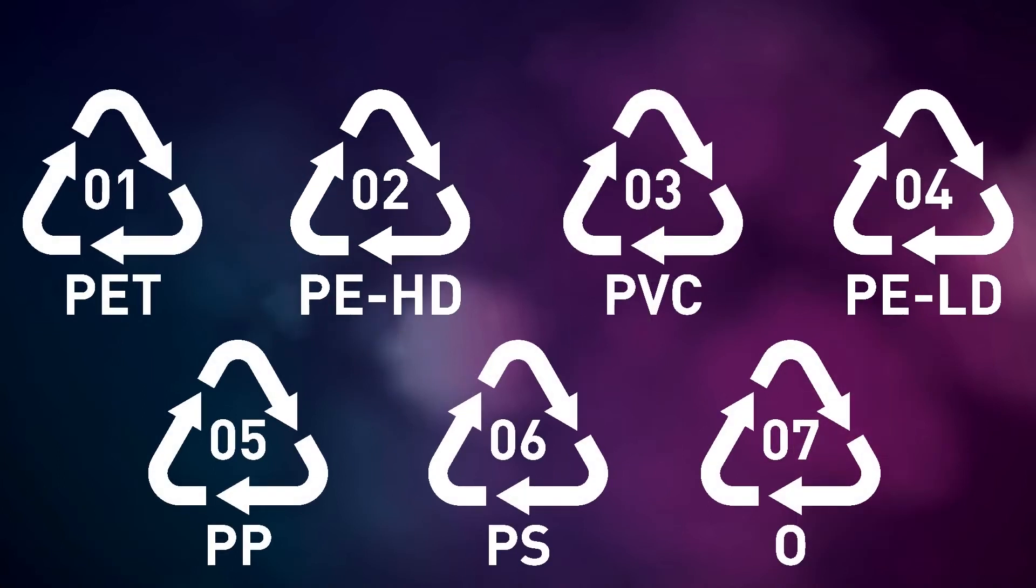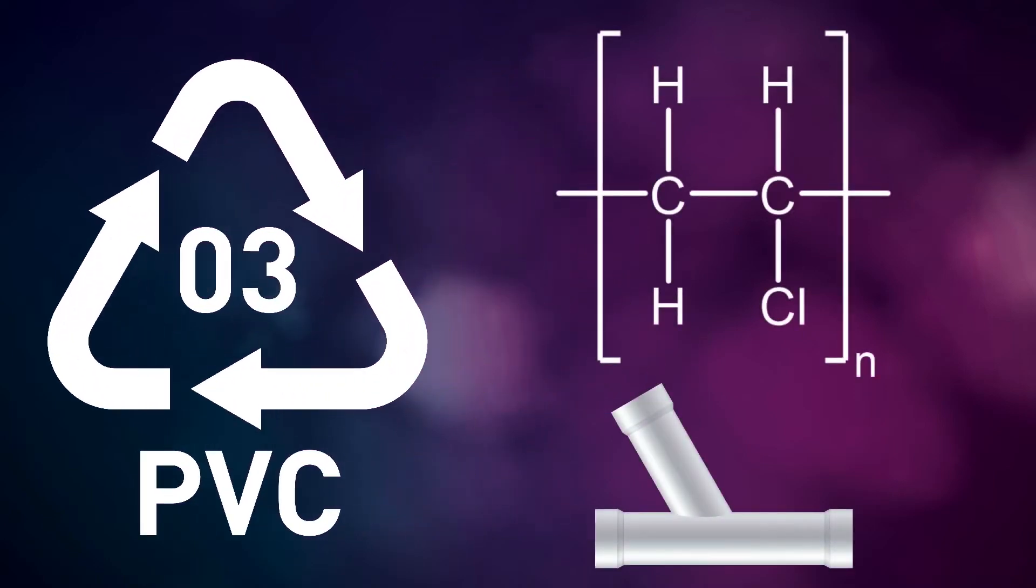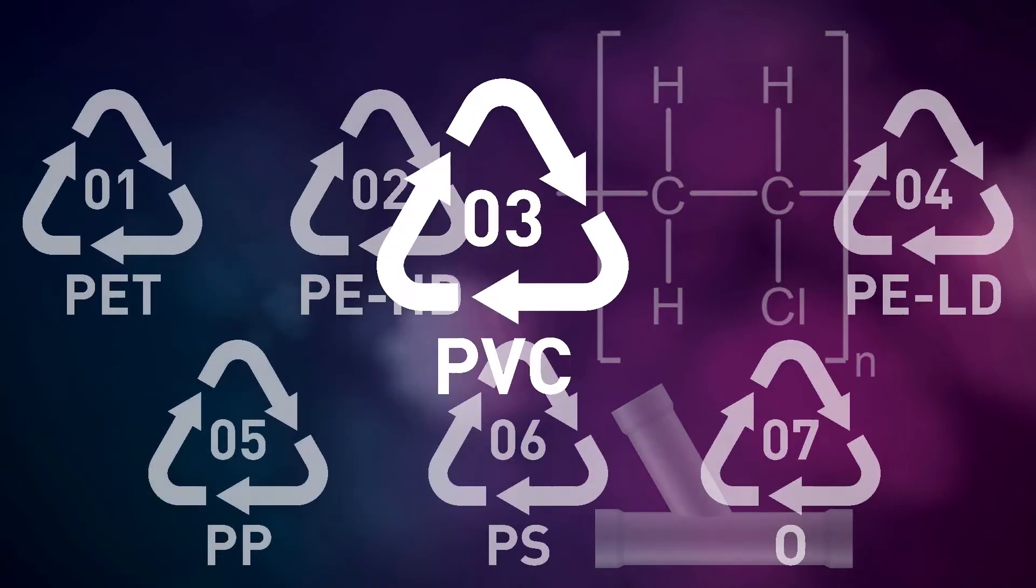Plastic number three is polyvinyl chloride, more commonly abbreviated to PVC. It is made of a single monomer, chloroethene or sometimes called vinyl chloride. This is the third most produced plastic in the world and is commonly used in plumbing for household pipes and double glazing window frames.